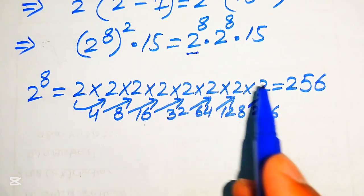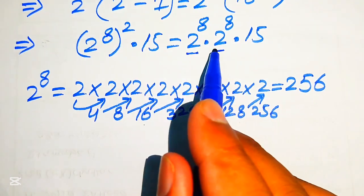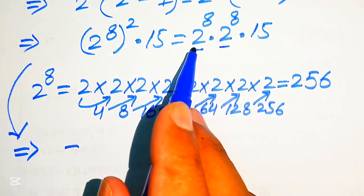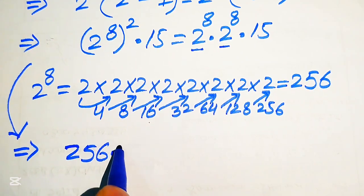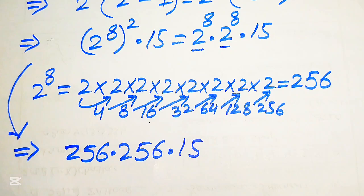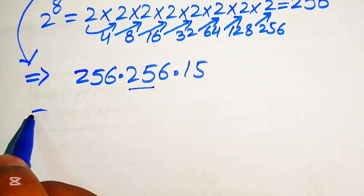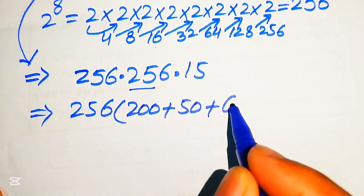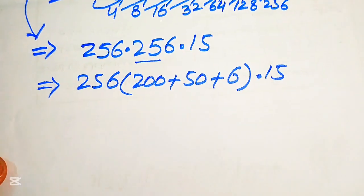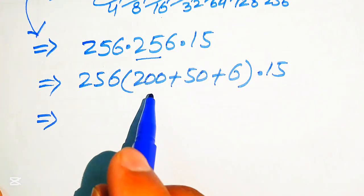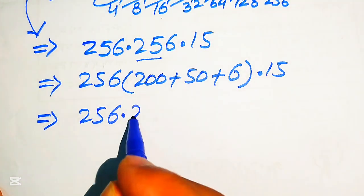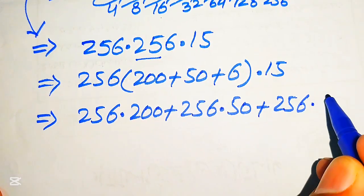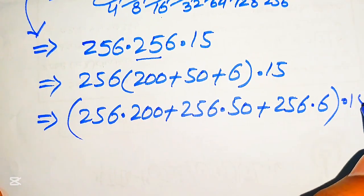Now we replace 2 to the power of 8 with 256 in both places, so our expression is written as 256 multiplied by 256, multiplied by 15. Further in the next step, we break 256 as 200 plus 50 plus 6, and multiply each part by 15. This gives us 256 multiplied by 200, plus 256 multiplied by 50, plus 256 multiplied by 6, and at the last the resulting answer is multiplied by 15.